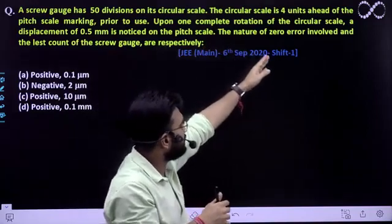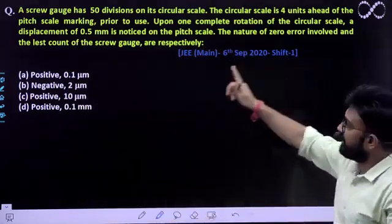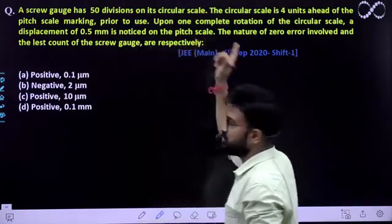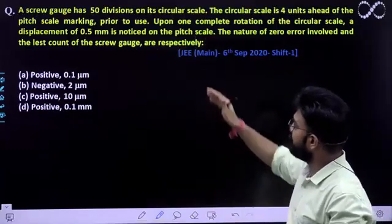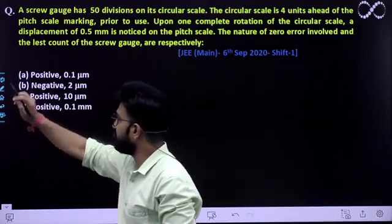So upon one complete rotation of the circular scale, ek pura complete rotation ho jata hai circular scale ka, a displacement of 0.5 mm is noticed on the pitch scale. To asani se pitch scale mein kitna notice kiya aapne displacement. To asani se aap least count asani se nikal sakti ho iska.